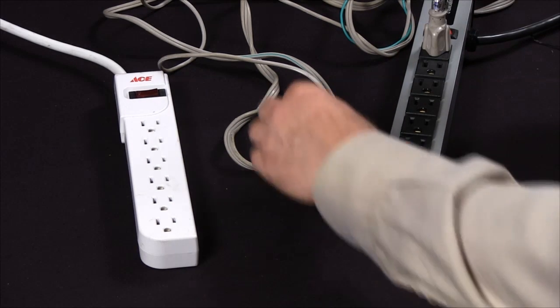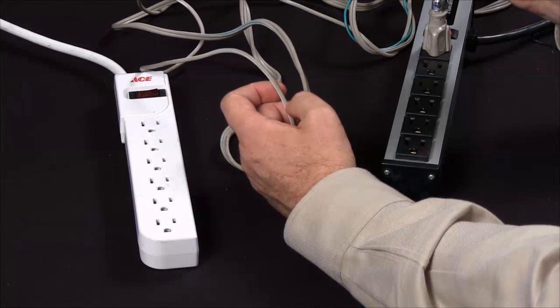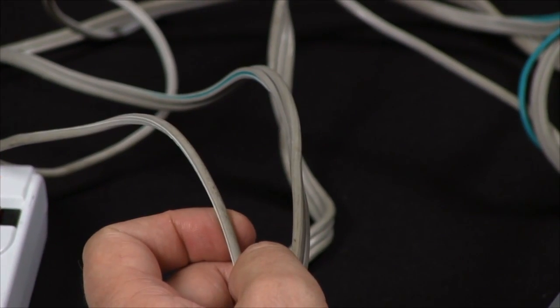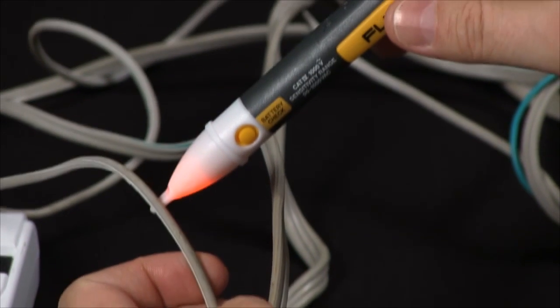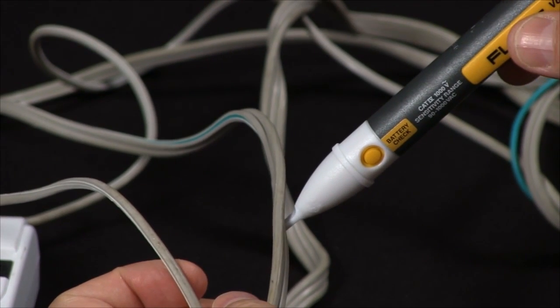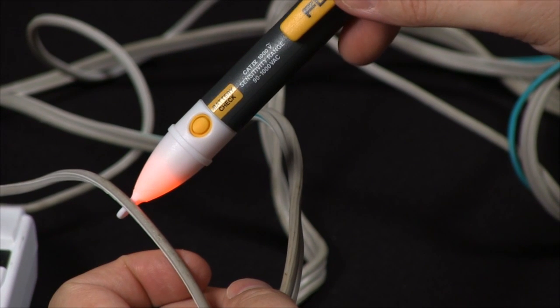Your first one will be to grab your conductors. You can automatically determine which is your hot and which is your neutral. You see, when you do have power flowing, you do have your red indicator light.